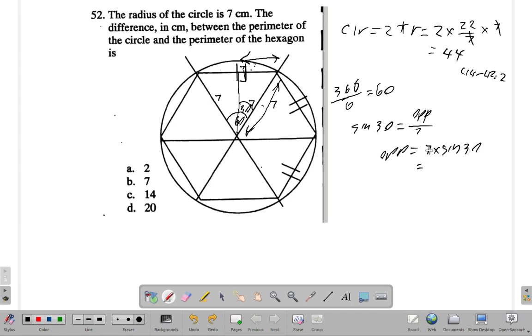You know, sine 30 is a half. If you remember that, 7 times half. But then when you double it from here all the way back here, you double half of 7, you get back 7. So it seems like it is 7.